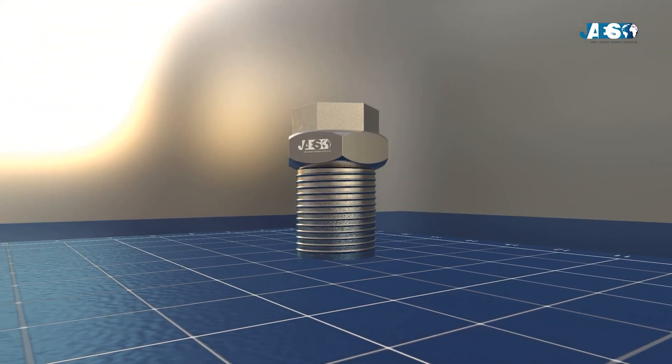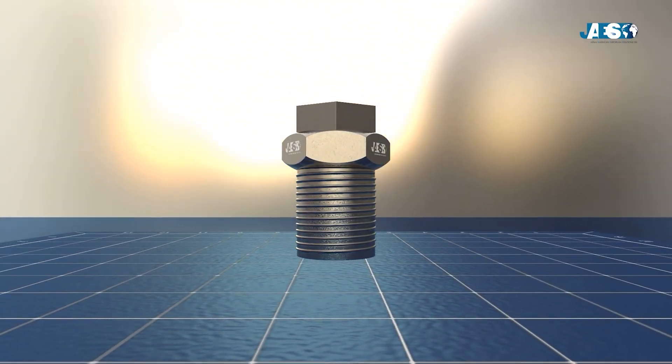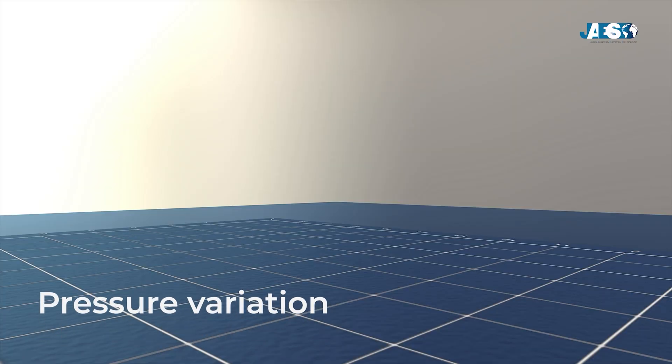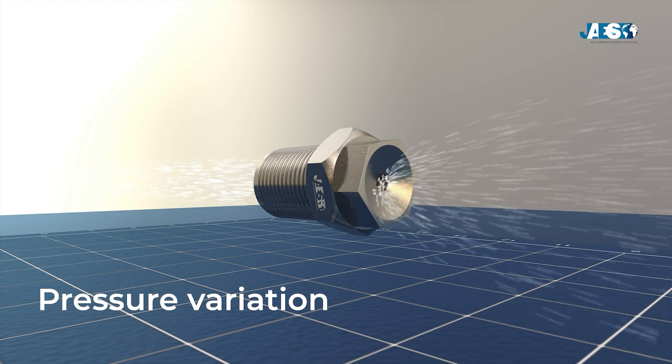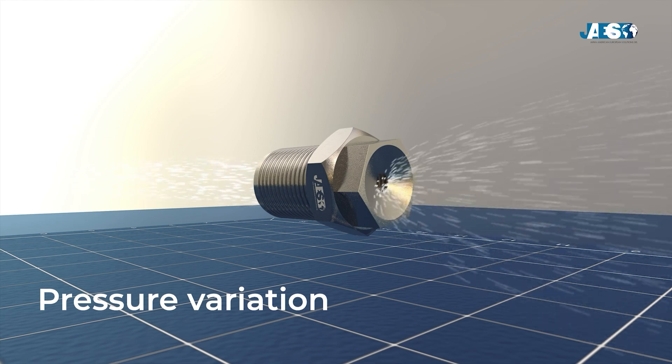Nozzle function is based on pressure variation and internal geometry. Pressure variation: The fluid enters the nozzle under pressure and exits with controlled velocity and direction.